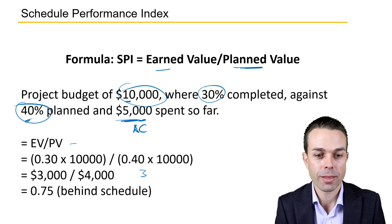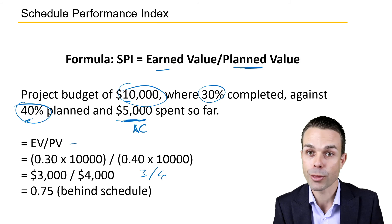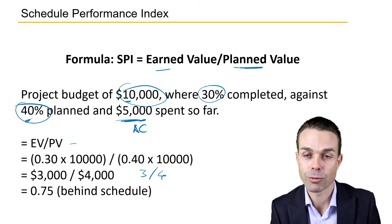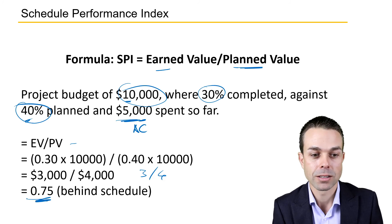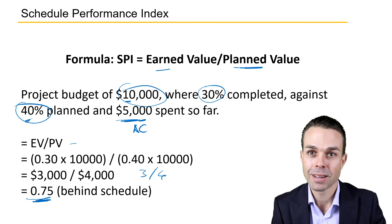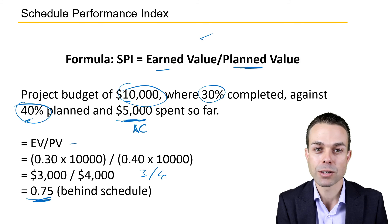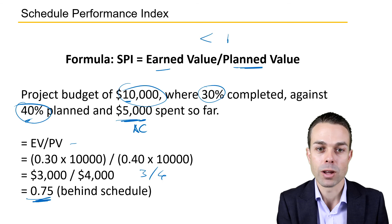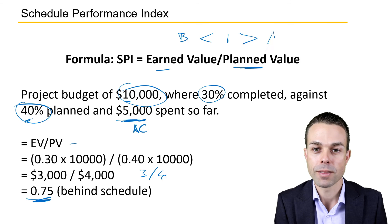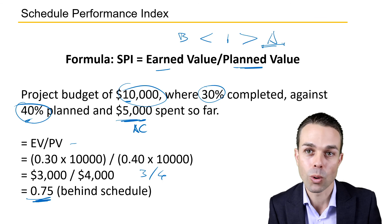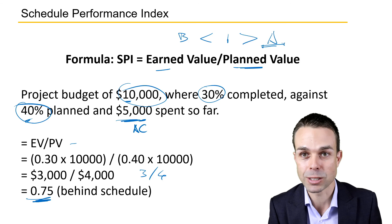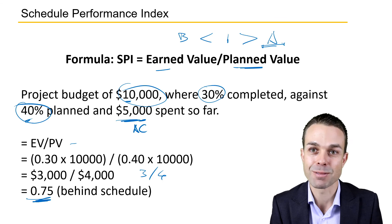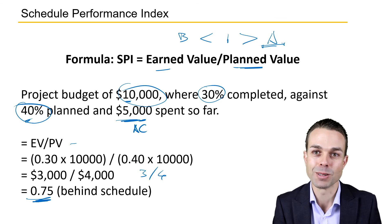So $3,000 divided by $4,000 gives us 0.75. Remember, if it's less than 1 we're behind schedule, and if it's greater than 1 we are ahead of schedule — we have delivered more than what we expected. That is the idea of the Schedule Performance Index.